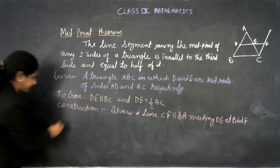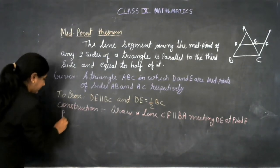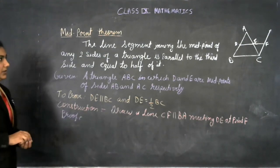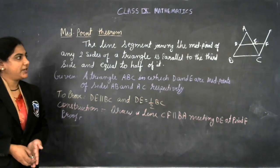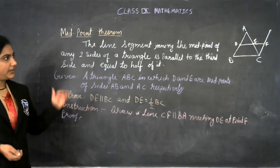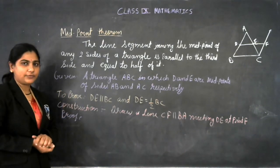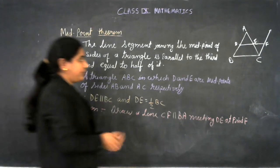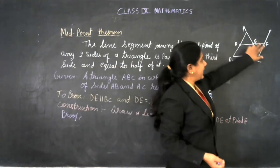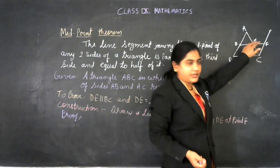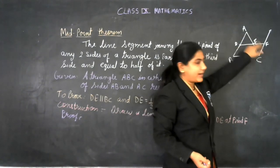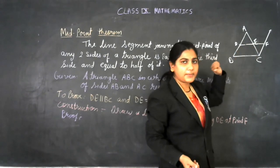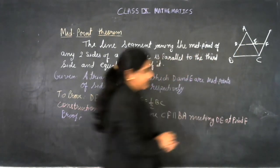Now we have to prove that DE is parallel to BC and DE equals half of BC. For proving this, if we prove these two triangles congruent, then we can say DE and BC are parallel.